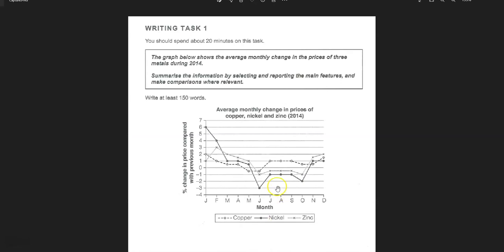Let's have a look then. As you know, we've got the usual four-paragraph structure. Introduction — you simply paraphrase the topic. What's on the x-axis? What's on the y-axis? That's one sentence; it shouldn't take you more than a minute or two. So, the line graph illustrates changes per month in three metal prices — copper, nickel, zinc — in 2014, or something such as that. Then an overview. As we can see here, all three metals experience considerable fluctuation, but there's one outlier — nickel. So, as always, it's the key features: what's the biggest, what's the smallest, what can be grouped, what's the same, what's not the same. Key features. Big picture.